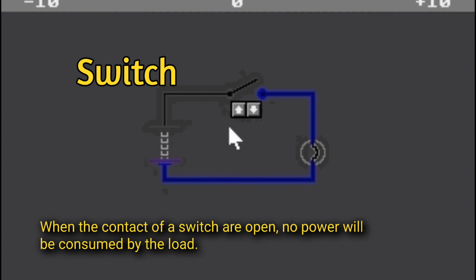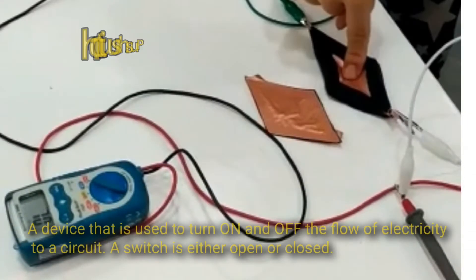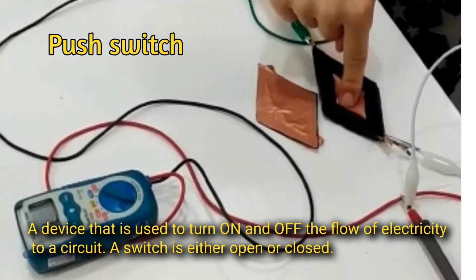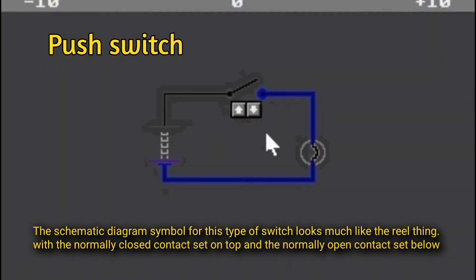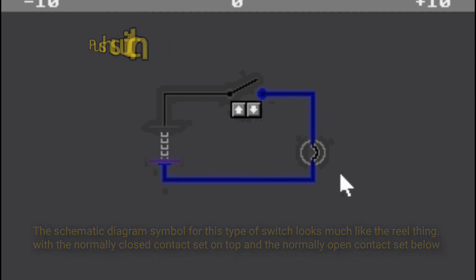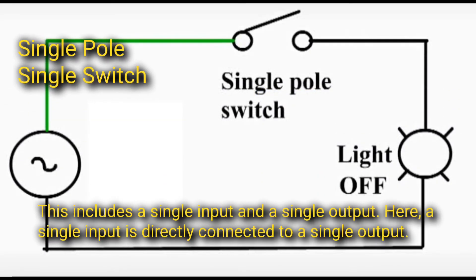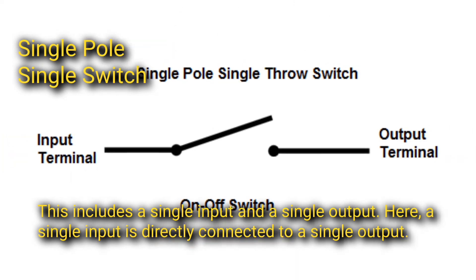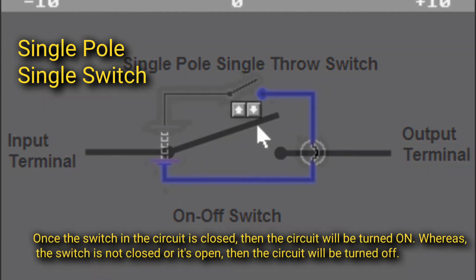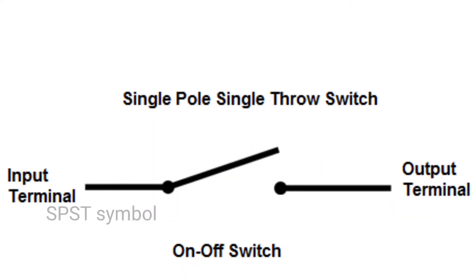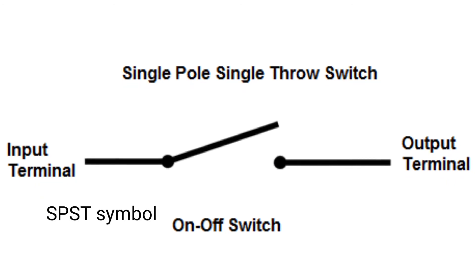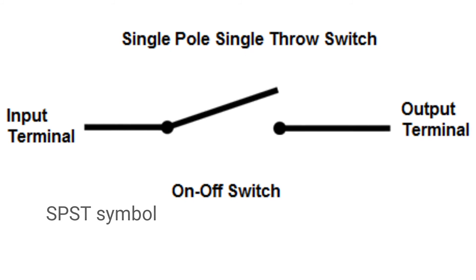When the contacts of a switch are open, no power will be consumed by the load. Push switch: a device used to turn on and off the flow of electricity to a circuit — the switch is either open or closed. The schematic symbol looks much like the real thing, with the normally closed contact on top and the normally open contact below. Single Pole Single Throw (SPST) switch includes a single input directly connected to a single output; when closed the circuit is on, when open the circuit is off.